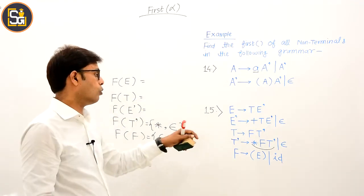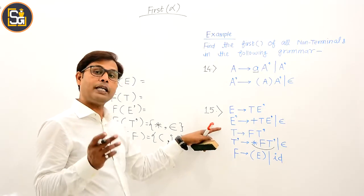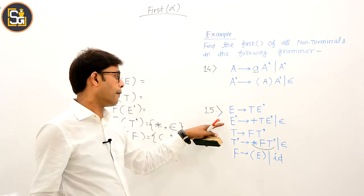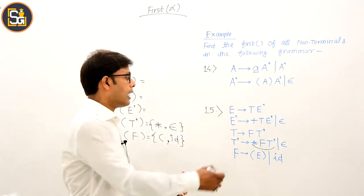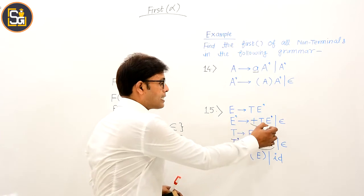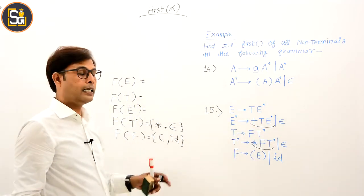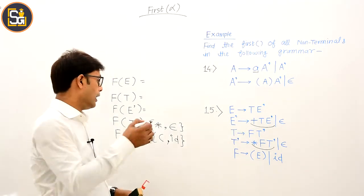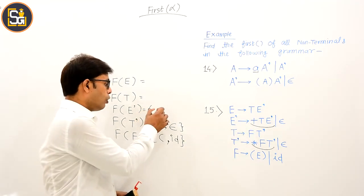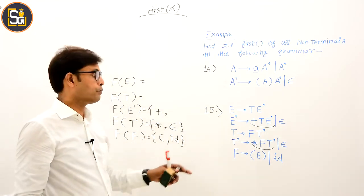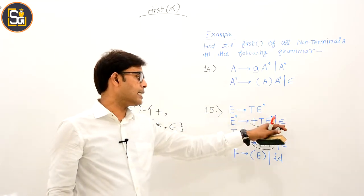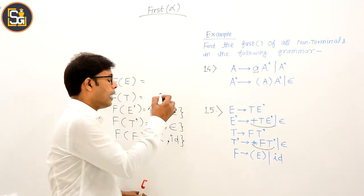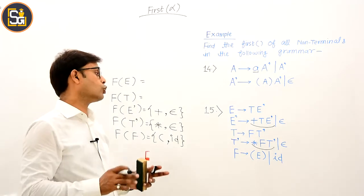Ab E-dash ka FIRST nikalte hain. E-dash jo bhi derive kar raha hai, us production pe pahunchna padega. E-dash derives plus T E-dash — to plus ek terminal hai, koi bhi string is production se banegi woh plus se hi start hogi, so plus FIRST mein aata hai. E-dash seedhay epsilon bhi derive kar raha hai, to epsilon bhi iske FIRST mein aayega. Iske alawa aur kuch nahi aayega. So FIRST of E-dash = {plus, epsilon}.